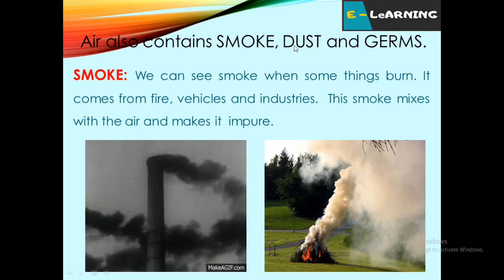Air also contains smoke, dust and germs. What is smoke? We can see smoke when some things burn. This smoke mixes with the air and makes it impure. From industry, you see, black color smoke is coming out and mixes with the air. White color smoke is also coming out and mixes with the air. Smoke makes the air impure.